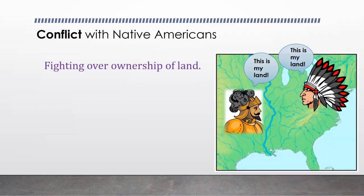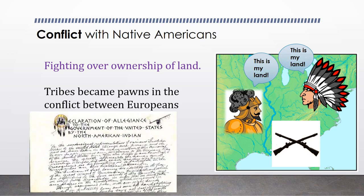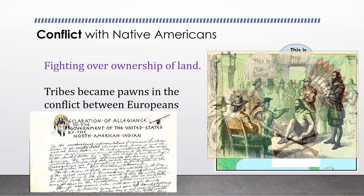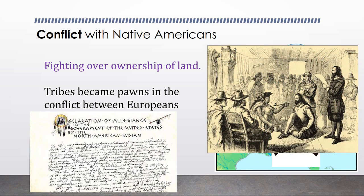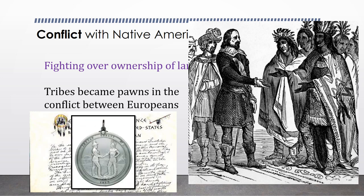Conflict with the Native Americans was mostly fighting over ownership of land. As you can see from the cartoon on the right, conflict was because Europeans had claimed the land for themselves, but the Native Americans believed the land had always been theirs. Native American tribes became pawns in the conflict between Europeans. Guns made the fight very unfair for the Indians. Treaties were written with English words and were often confusing to the Native Americans. When they signed and smoked the peace pipe with European leaders, they had no idea they were signing their land and way of life away. Sometimes medallions were given to Native Americans who signed these treaties as a symbol of value they might understand.